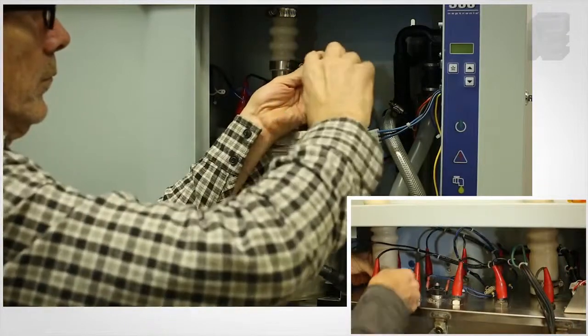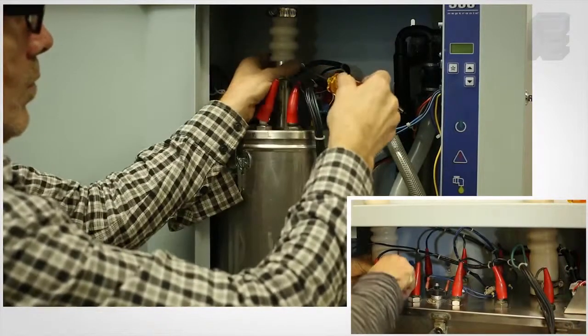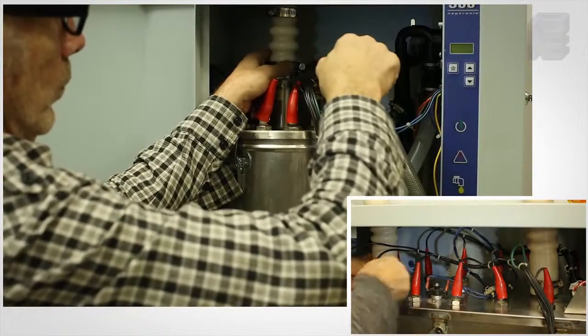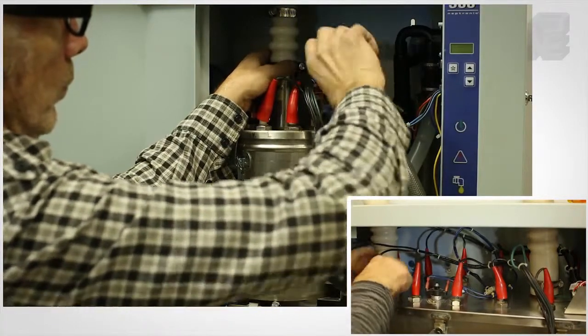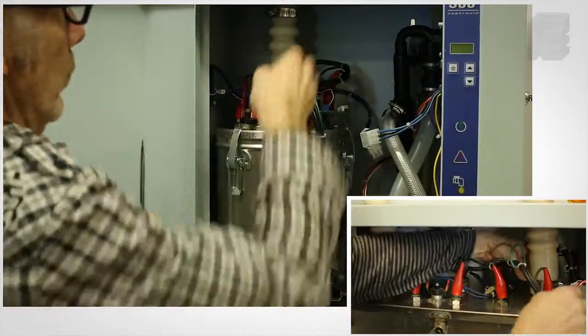Loosen the clamp or clamps that connect the flexible steam hose to the stainless steel boiling chamber with a 5-16 inch nut driver or standard screwdriver and pry the hose off the steam outlet of the humidifier.